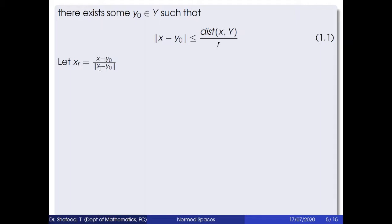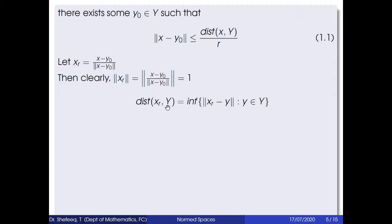Taking the norm of x_r on both sides gives ‖x_r‖ = 1. Now dist(x_r, Y) by definition equals the infimum of {‖x_r − y‖ : y ∈ Y}, which is less than or equal to ‖x_r − 0‖. Since 0 belongs to Y, taking y = 0 gives dist(x_r, Y) ≤ ‖x_r‖ = 1. So dist(x_r, Y) ≤ 1.